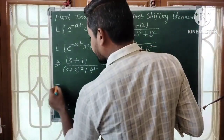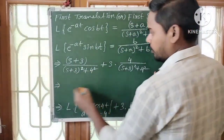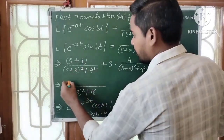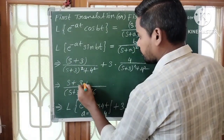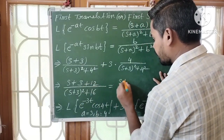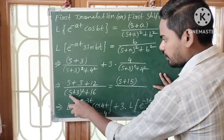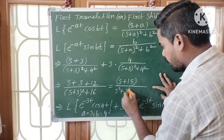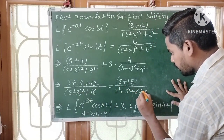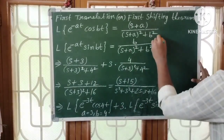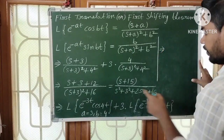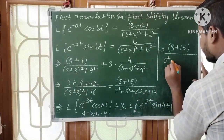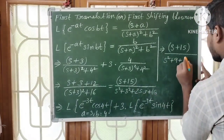Let us simplify further. The denominators are the same, so we write a common denominator: (s+3)² + 16. Adding the numerators: the first numerator is (s+3), and 3 times 4 equals 12, so plus 12. That gives (s+3+12) = (s+15). Expanding (s+3)²: s² + 2·s·3 + 9 = s² + 6s + 9. Adding 16 gives s² + 6s + 25.